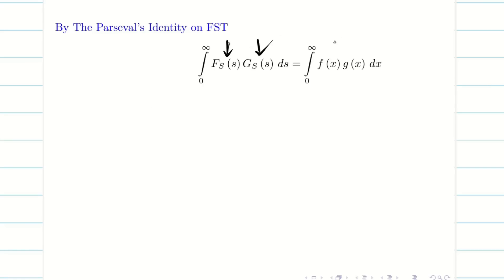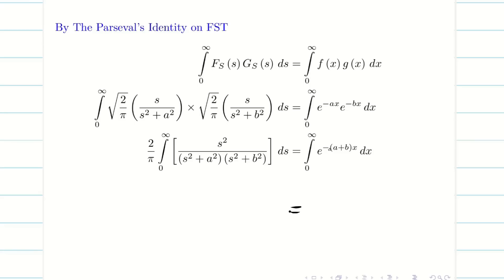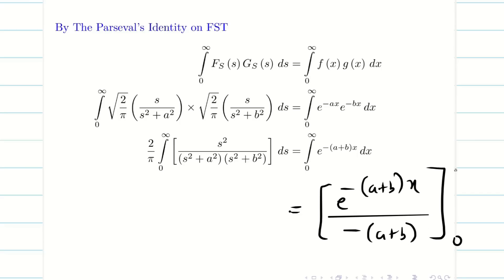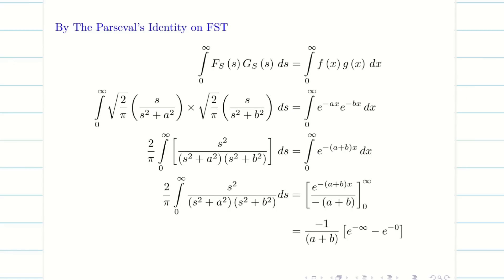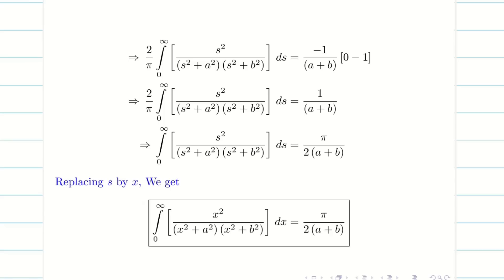Write the values on the left-hand side and right-hand side. Club the 2/π constant, and e^(−ax)·e^(−bx) = e^(−(a+b)x). Integrating e^(−(a+b)x) gives e^(−(a+b)x)/(−(a+b)) from 0 to ∞. Since e^(−∞) = 0 and e^0 = 1, substituting limits gives 0 − (−1/(a+b)) = 1/(a+b). Taking 2/π to the other side gives π/(2(a+b)). Replacing s by x gives our identity.